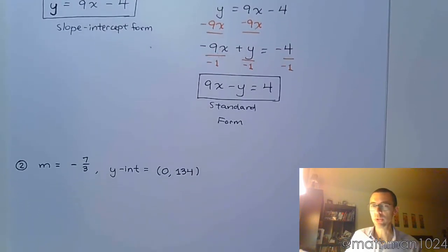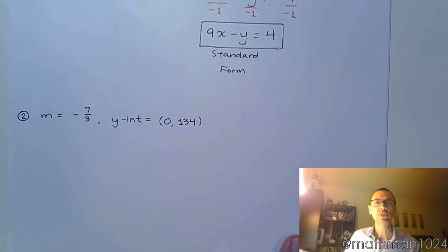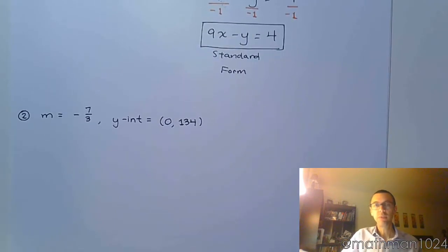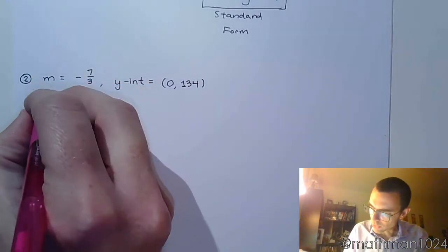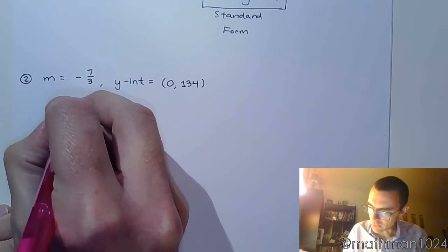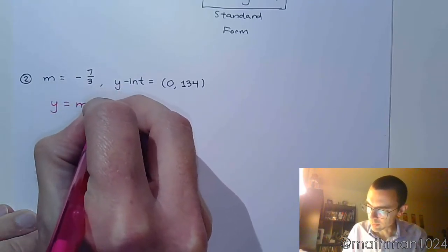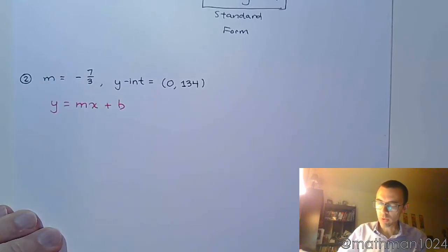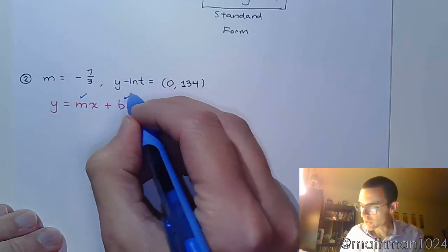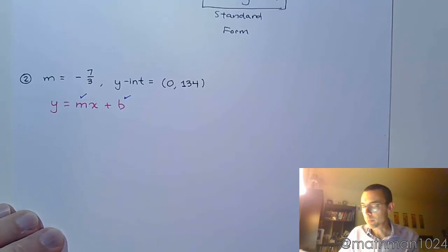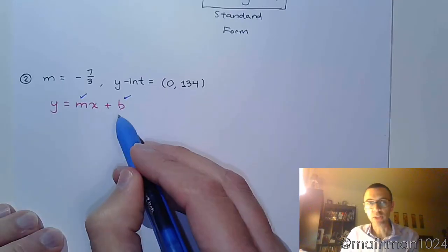This next example, which we saw creep up at the end, you have a slope of negative 7 thirds and a y-intercept of 0, 134. So just like we did above, let's start with that slope-intercept form and see if we have all of the information that we need. Well, you can see we have the slope and we have the y-intercept 0, 134. So that gives me the b-value automatically.